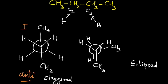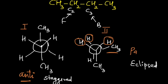Similarly, in structure two, a hydrogen atom will completely hide the hydrogen atom on the back. However, a hydrogen cannot fully eclipse the CH₃ group because it is bigger. So this eclipsed form is called partially eclipsed, because the group on the back carbon is not completely hidden by the group on the front carbon. If I rotate the back carbon by 60 degrees once more, we get a staggered form again.